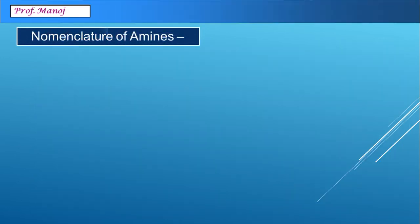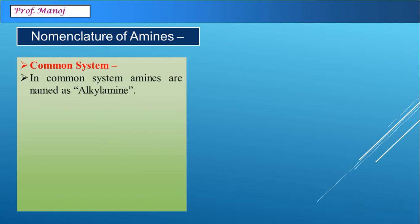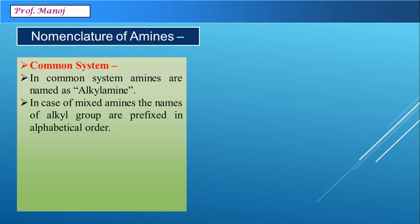Let us come to the nomenclature of amines. First we learn about the common system. In the common system, amines are named as alkyl amines — note it is written without a gap, as 'alkylamine'. If the amines are mixed amines, then the names of alkyl groups are prefixed in alphabetical order.